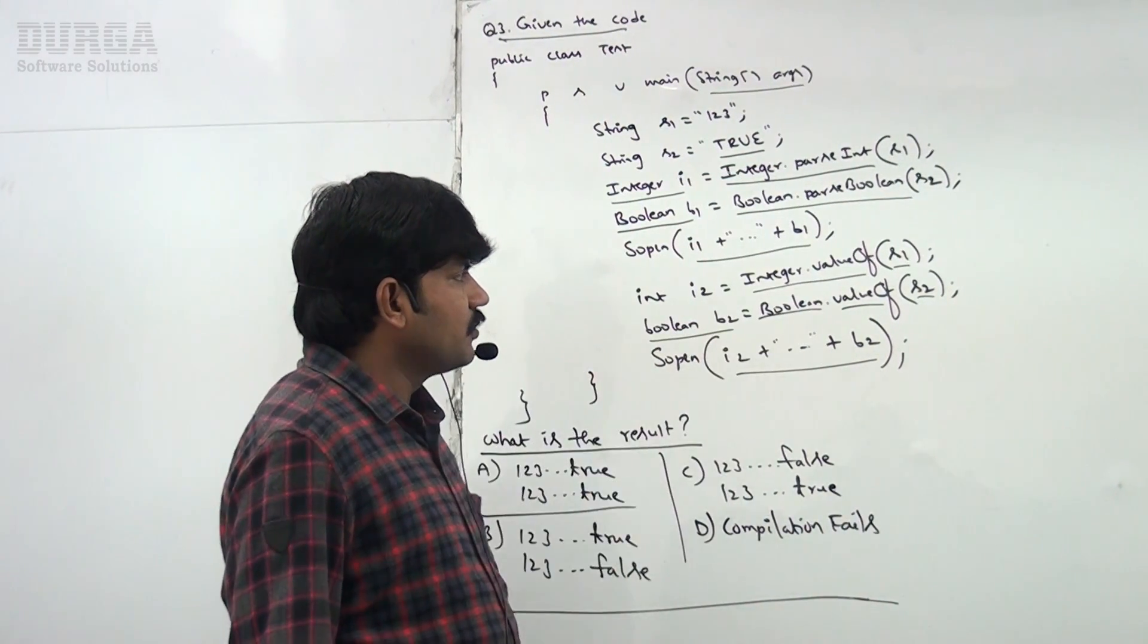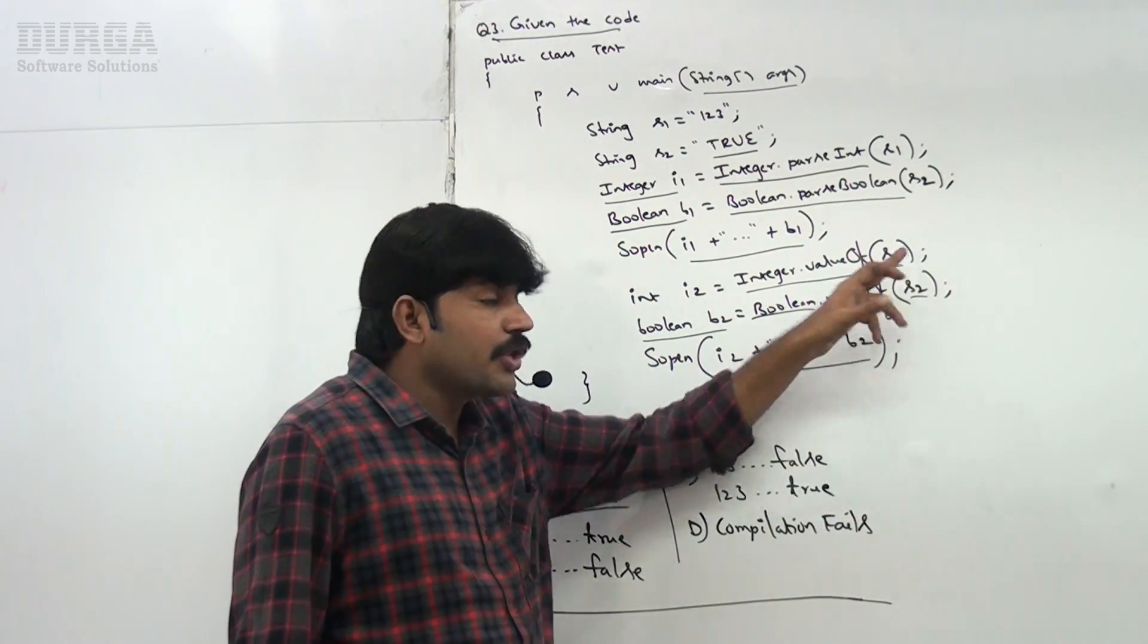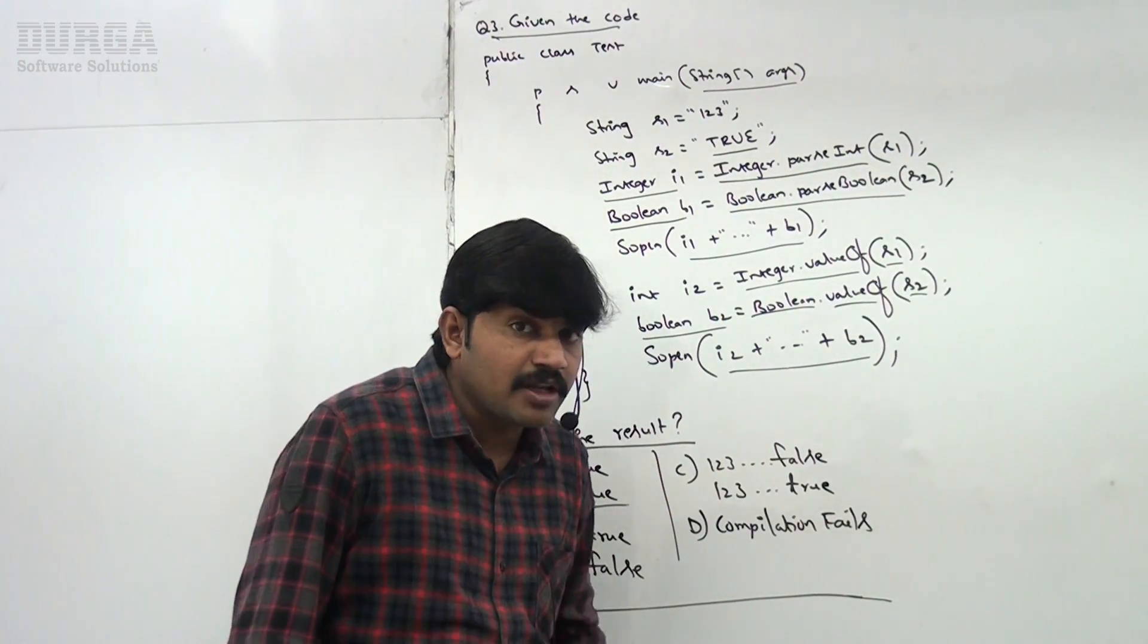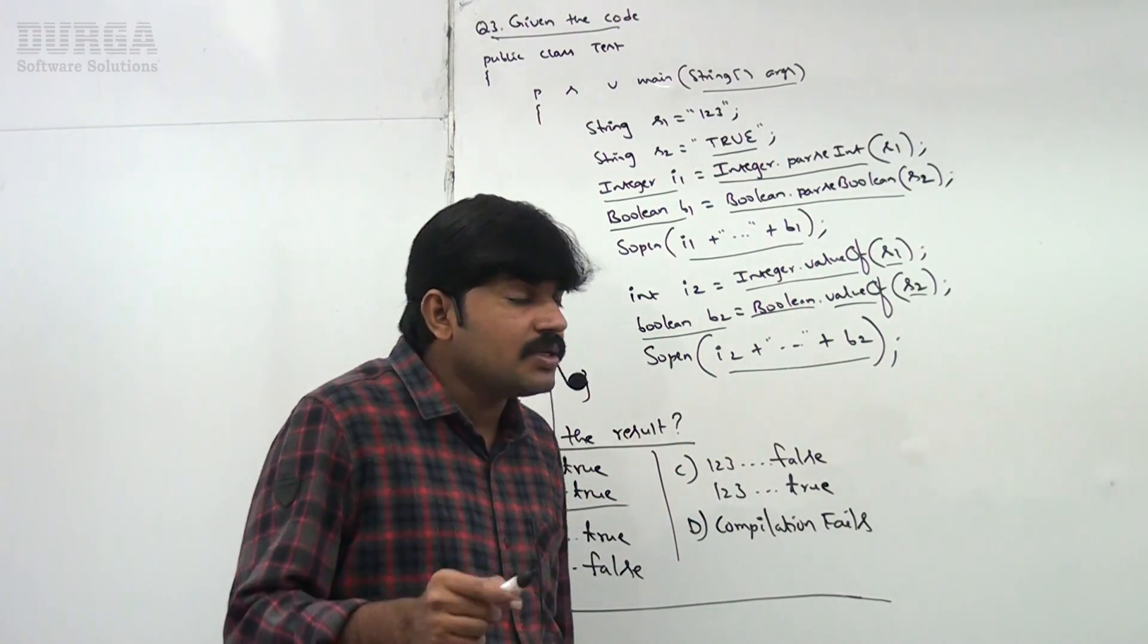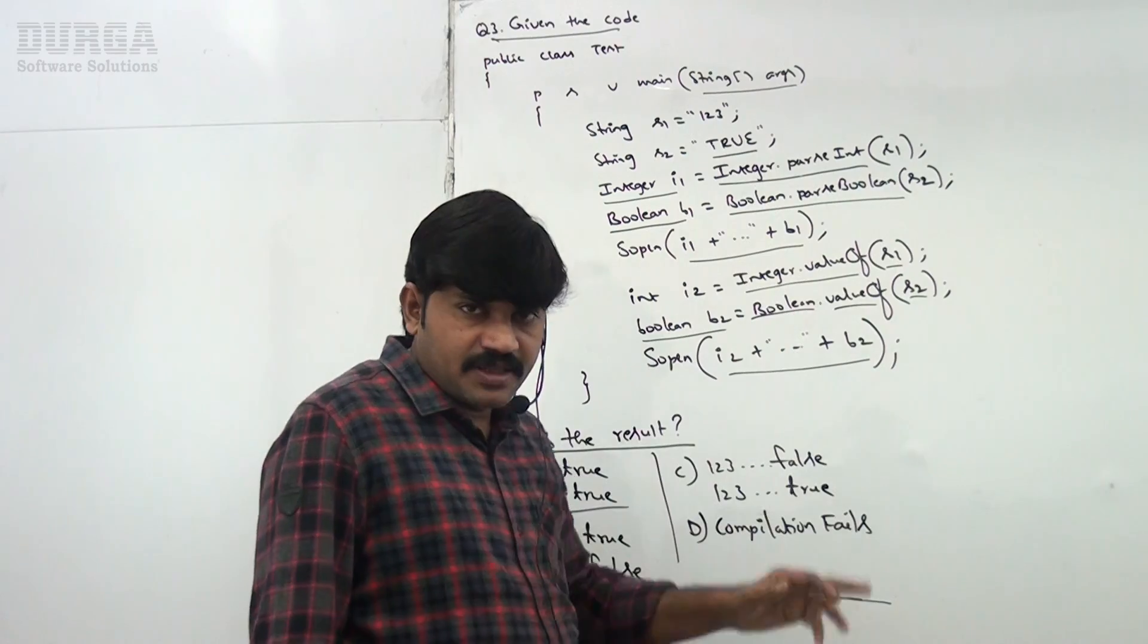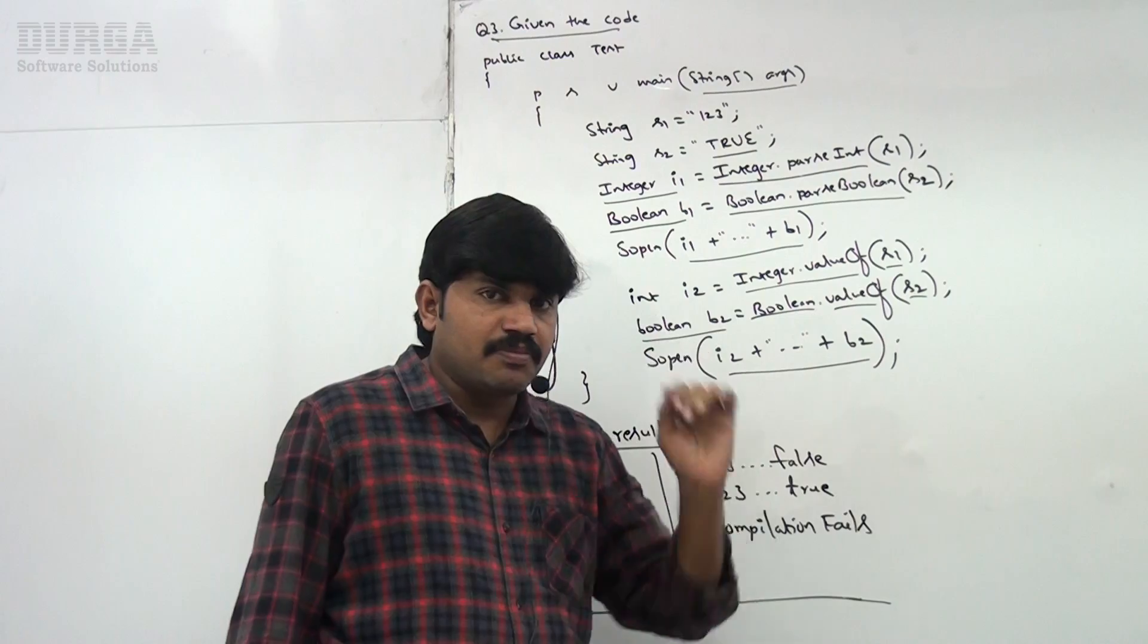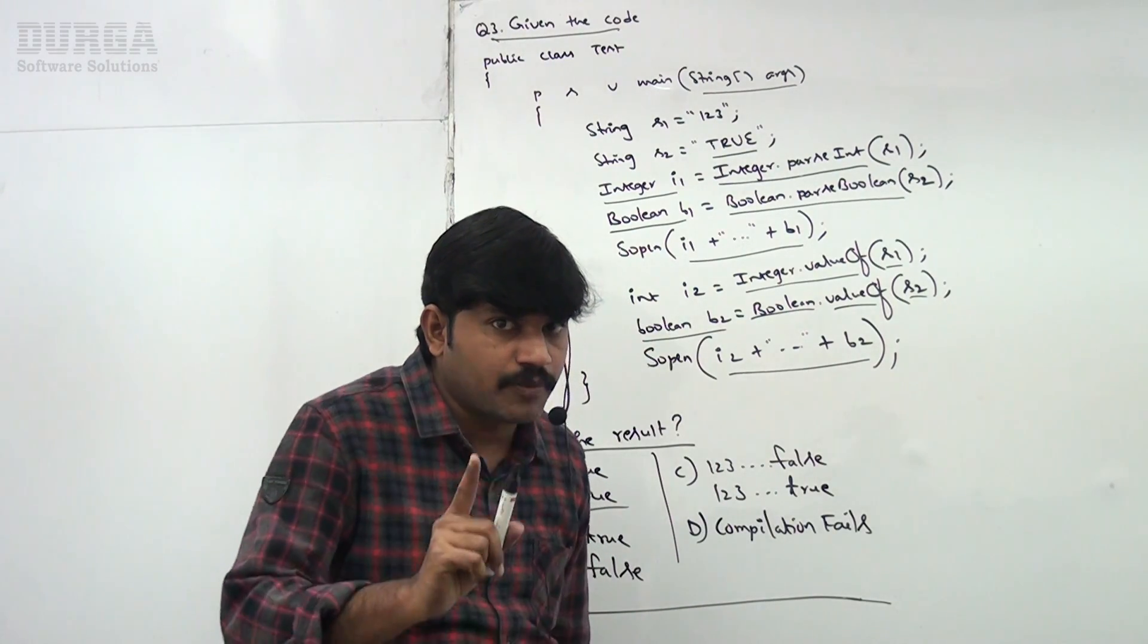Almost multiple utility methods we are using. valueOf method to convert String to wrapper object. Well, its job is to convert String to wrapper object. parseXXX method's job is to convert String to primitive type, to convert String to primitive type.